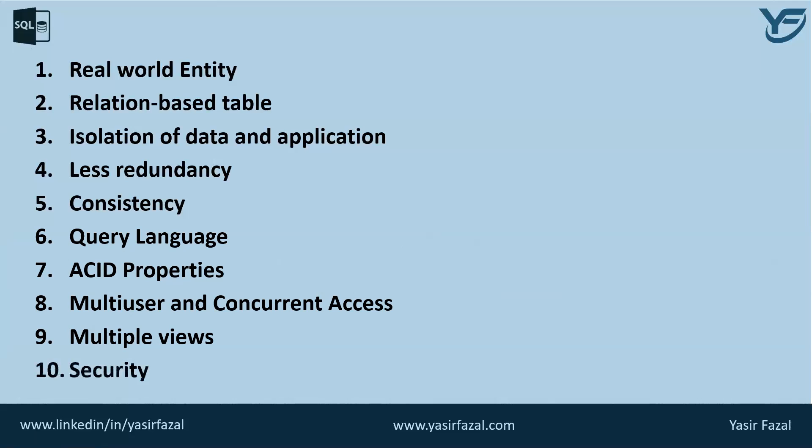The last characteristic is security features. Multiple views offer security to some extent, where users are unable to access data of other users and departments. DBMS offers methods to impose constraints while entering and retrieving data. It provides many different levels of security features — for example, a user in the sales department cannot see data belonging to the purchase department. Additionally, it can be managed how much data of the sales department is displayed to a user. Since a DBMS is not saved on disk as traditional file systems, it is very hard for miscreants to break the code.